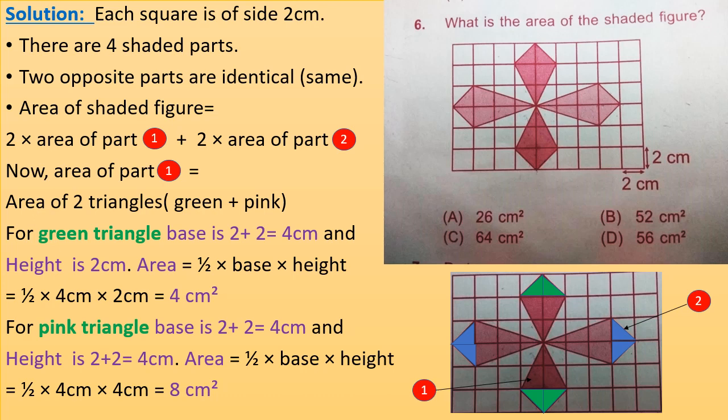Now for the area of the two triangles — green and pink — in part one: for the green triangle, the base is 2 plus 2 equals 4 cm, since there are two squares along the base, and the height is 2 cm. So the area equals half times base times height equals half times 4 cm times 2 cm equals 4 cm squared.